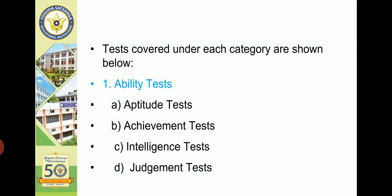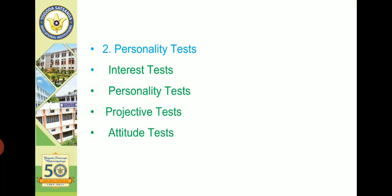Tests covered under each category are shown below. Ability tests include: aptitude test, achievement test, intelligence test, and judgment test. Personality tests include: interest test, projective test, and attitude test. Various types will be explained in detail in the next video.